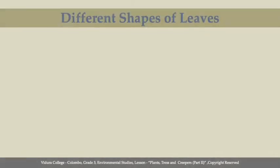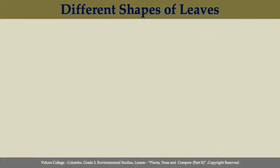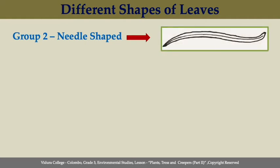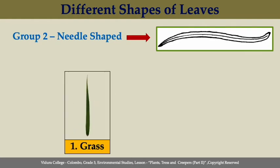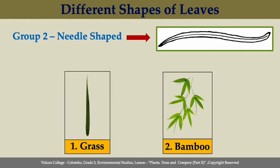The second shape is needle-shaped. Needle-shaped leaves are narrow, long, pointed, thin leaves that resemble needles. As examples, grass and bamboo can be taken.